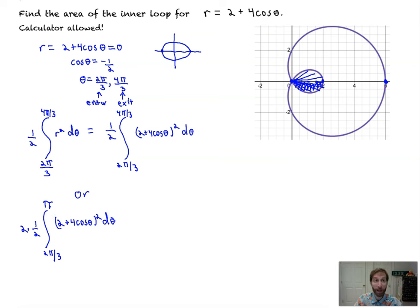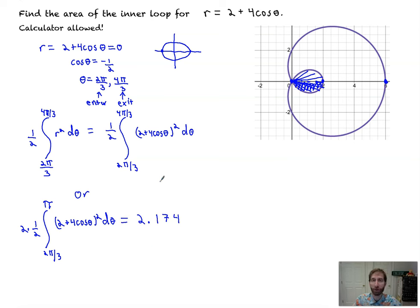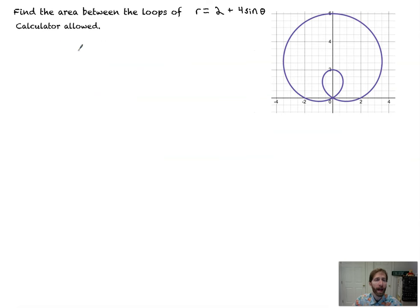I'll use the calculator. And the answer is 2.174. That's the same answer we get for either of those integrals. That's how to find the area of the inner loop.